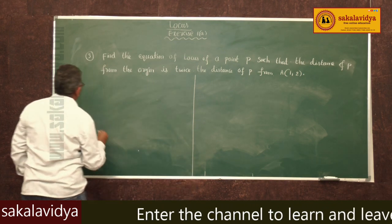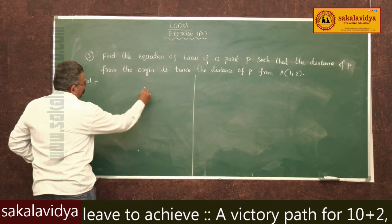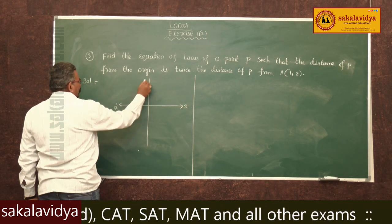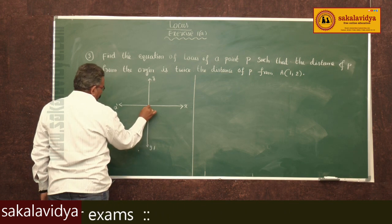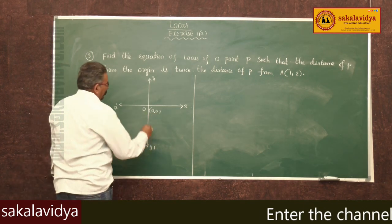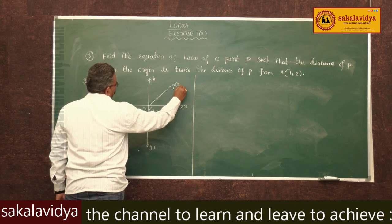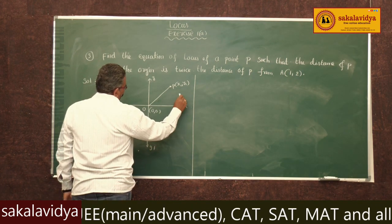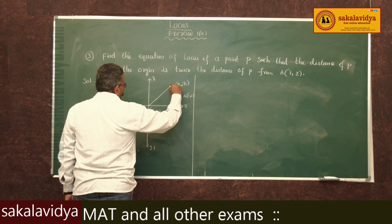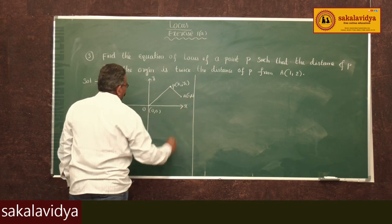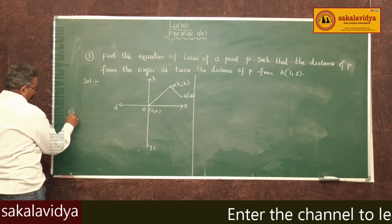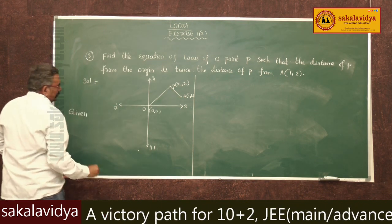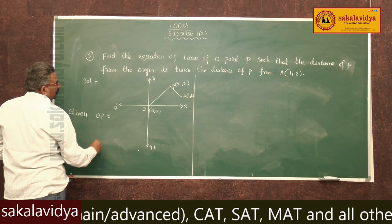Draw the coordinate axis — x, x-dash, y, y-dash — with origin at (0, 0). Let P(x1, y1) be the point on the locus, and point A is (1, 2). Given that the distance from the origin to P is 2 times the distance from P to A — that means OP equals 2 times PA.